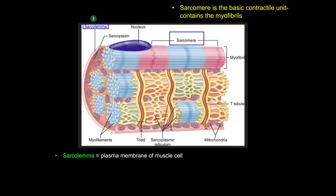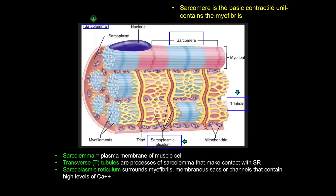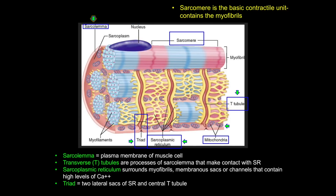The T-tubules make contact with membranous sacs called the sarcoplasmic reticulum, which contains high concentrations of calcium important for the control of muscle contraction. The place where the sarcoplasmic reticulum sacs join the T-tubules is called a triad, named after two sacs of the sarcoplasmic reticulum plus one tubule. Note that large numbers of mitochondria surround the myofibrils, important due to the large energy demands of the muscle cells.